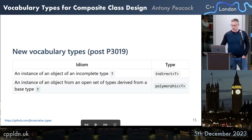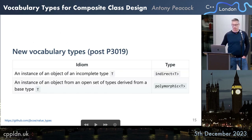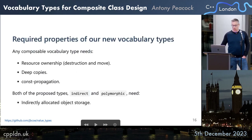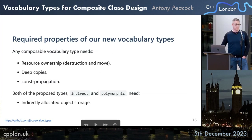We are proposing two new vocabulary types: indirect and polymorphic. Indirect models an instance of an object of an incomplete type T, and polymorphic models an instance of an object from an open set derived from a base type T. Any composite vocabulary type needs resource ownership, destruction and move, deep copies, and const propagation. Both indirect and polymorphic need indirectly allocated object storage.